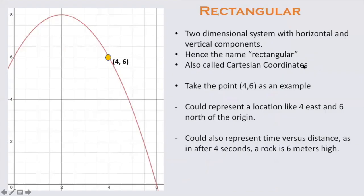Before we do that though, gotcha, let's do a very quick review of rectangular coordinates. That's a two-dimensional system with horizontal and vertical components, hence the name rectangular. You can see on the grid system all the squares and rectangles. This is also called the Cartesian coordinates.